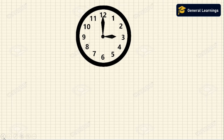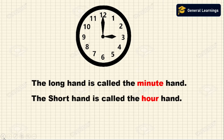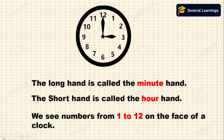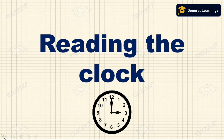How many hands do we see on this clock? We see two hands. The long hand is called the minute hand. The short hand is called the hour hand. How many numbers do we see on this clock? We see numbers from 1 to 12 on the face of a clock.